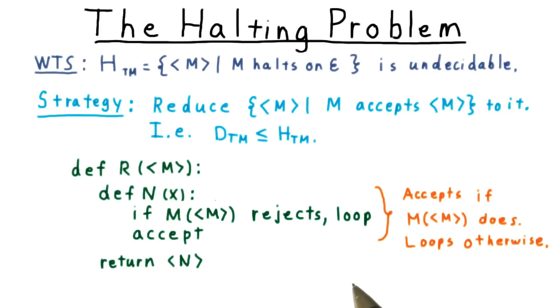Note that because we're switching from a language about accepting to a language about halting, we have to turn a rejecting non-acceptance into a looping one. The end result here is that if m accepts its own description, then n accepts every string, the empty one in particular.